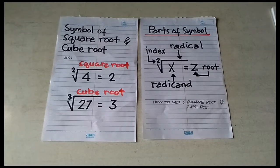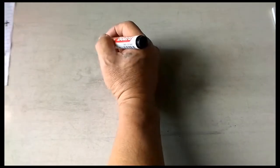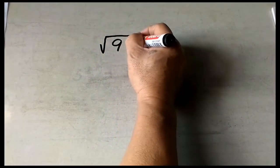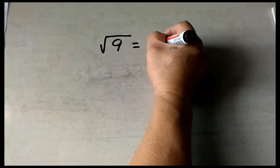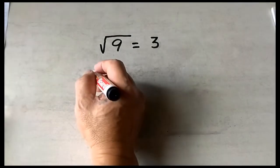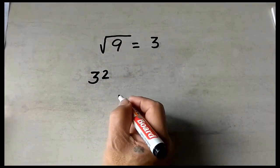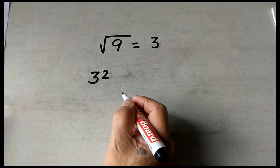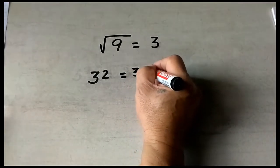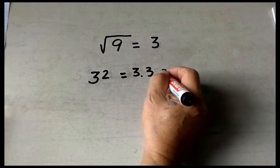Square root of 9 is equal to 3, because 3 squared is equal to 3 times 3. You multiply the base twice — 3 times 3 is equal to 9.